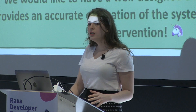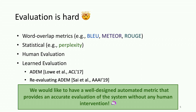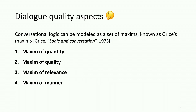Ideally, what we want in the research community — and I think also in the production community — is a well-designed automated metric that can provide an accurate evaluation of the system without any human intervention. Now that I have discussed some of the challenges of open-ended dialogue systems, I'm going to talk a bit about how we can define and characterize successful conversations.